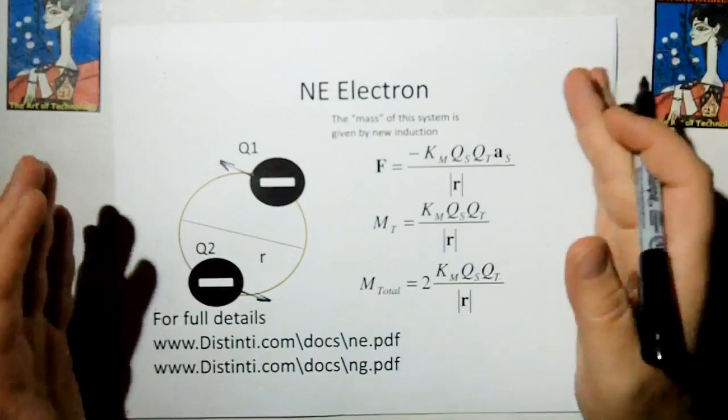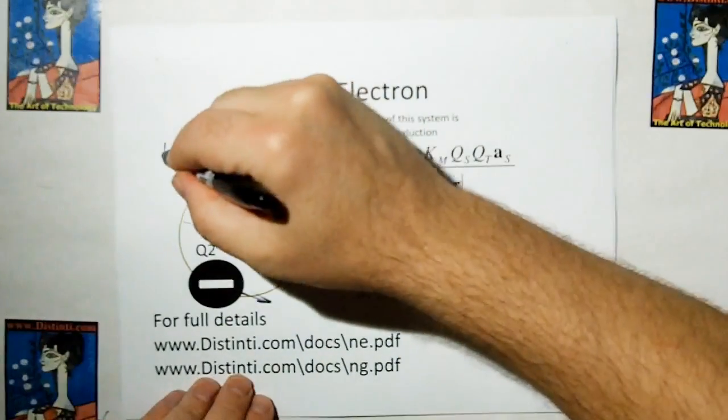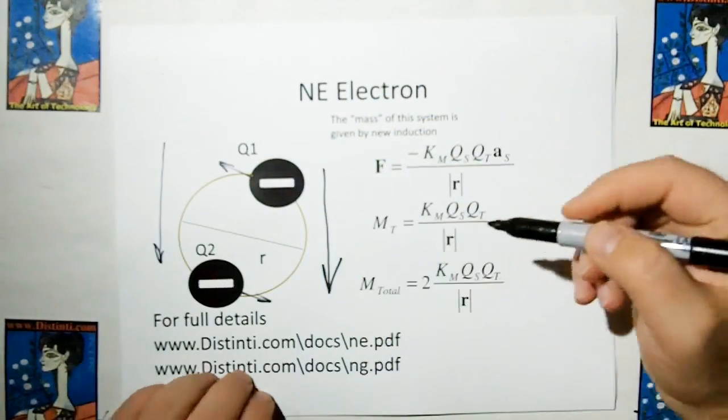And basically the way this works, let's say this electron is caught in a gravitational field. So now you have ether accelerating in this direction toward the earth.